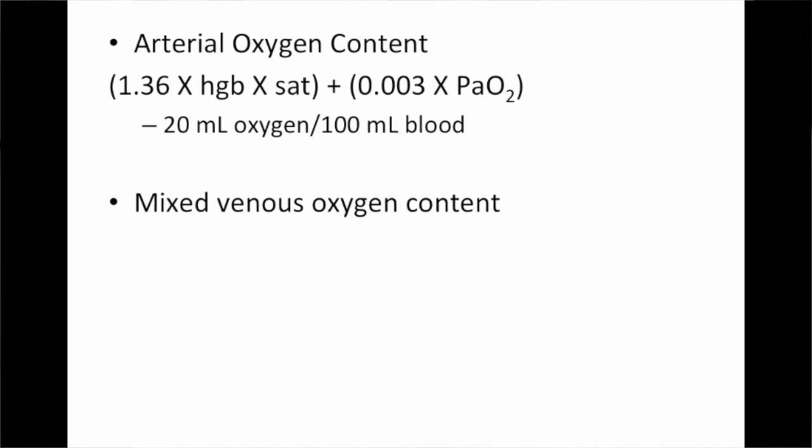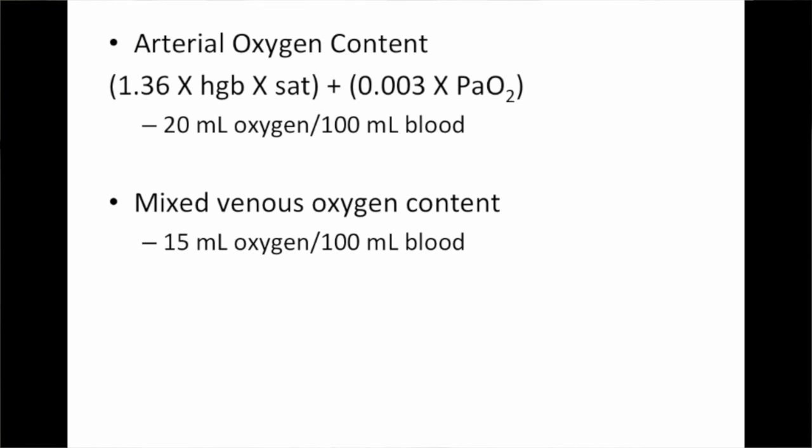The next equation is that of mixed venous oxygen content. It uses the same equation, but the sample is drawn from the pulmonary artery — after blood has traveled through the body, oxygen has been extracted, the blood has returned to the right heart from the superior and inferior vena cava, mixed in the right ventricle, and is heading back toward the lungs through the pulmonary artery. The normal value is 15 mL of oxygen per 100 mL of blood.